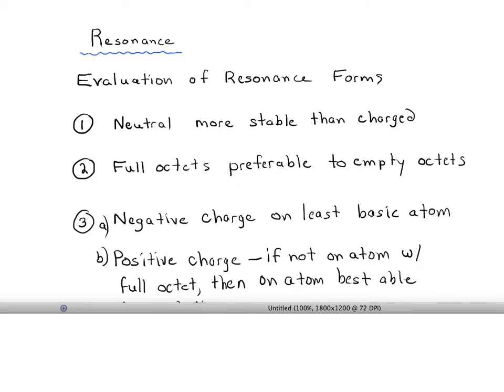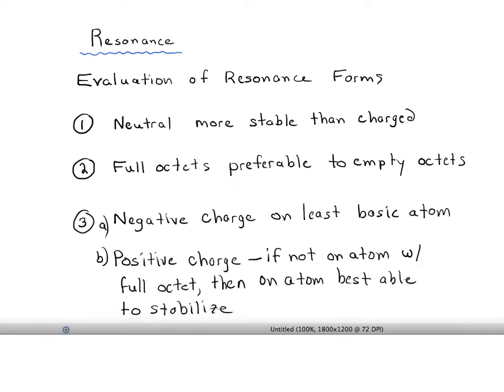For a positive charge, if you can't put a positive charge on an atom with a full octet, then you want to put a positive charge on the atom best able to stabilize.